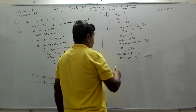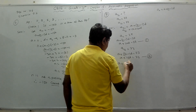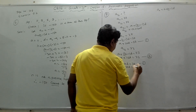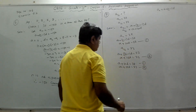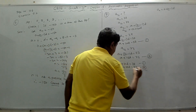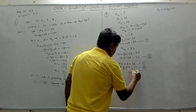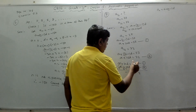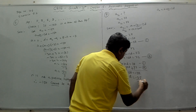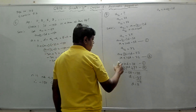Now solving by elimination: subtracting equation 1 from equation 2 gives 5d = 35, so d = 7. Substituting d = 7 into equation 1: a + 10 × 7 = 38, so a + 70 = 38, giving a = 38 − 70 = −32.